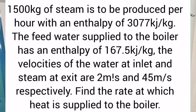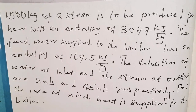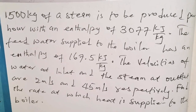We are going to look at this question under the application of the steady flow energy equation. The question says 1,500 kilograms of steam is to be produced per hour with an enthalpy of 3,077 kilojoules per kilogram. The feed water supplied to the boiler has an enthalpy of 167.5 kilojoules per kilogram. The question is asking us to find the rate at which heat is supplied to the boiler — basically the heat supplied per unit time, which you can also call power.